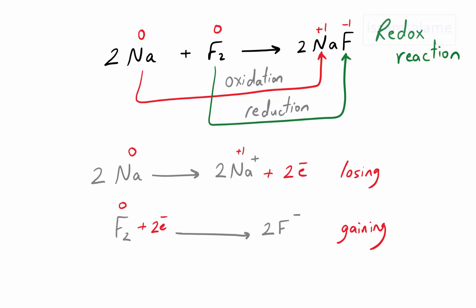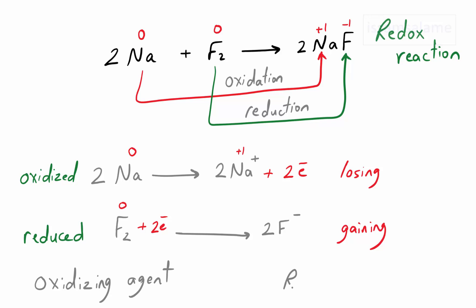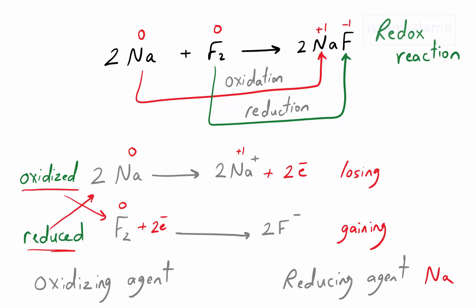When electrons are on the product side, it means they were lost — that is oxidation. When electrons are on the reactant side, it means they are gained — that is reduction. So sodium is oxidized and fluorine is reduced. The oxidizing agent is the substance that causes reduction in the other — here that is fluorine. The reducing agent is the substance that is oxidized — here that is sodium. Always choose the oxidizing and reducing agents from the reactant side.